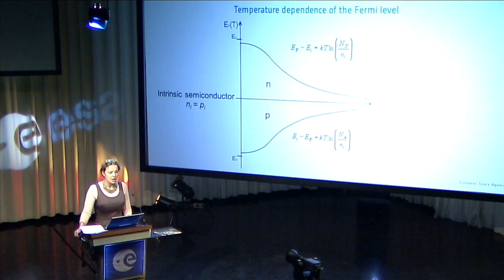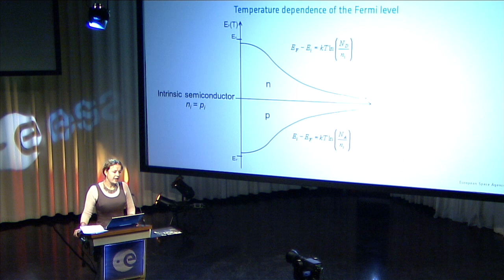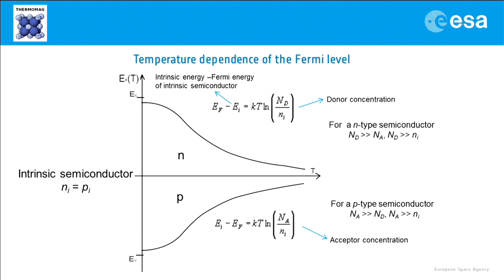While at low temperatures we have a bigger amount of one kind of charge carriers, with heating, the donor levels of n-type semiconductors deplete of electrons and Fermi level tends toward the direction of an intrinsic semiconductor. Similar case for the p-type.